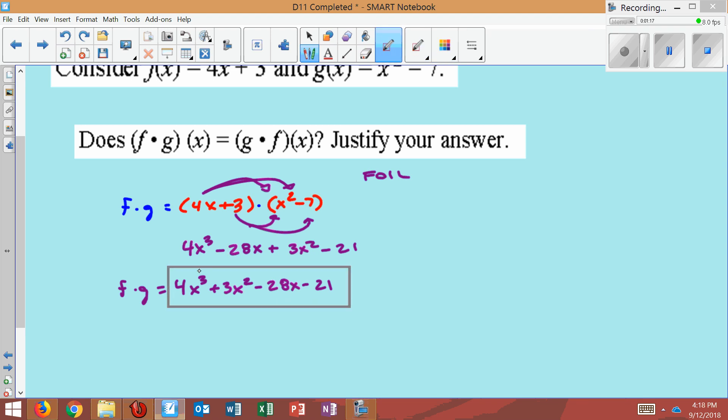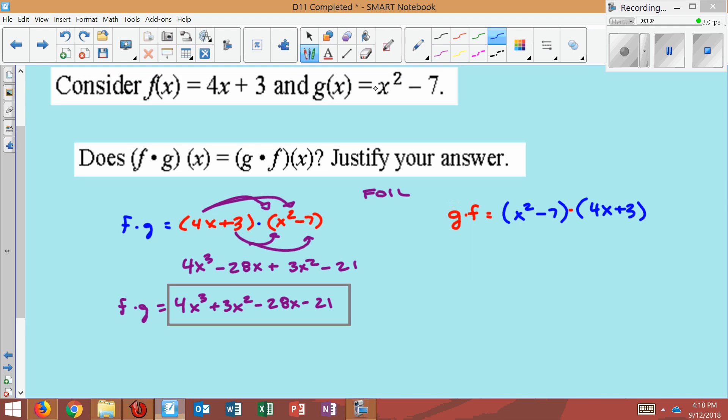Now let's see if this equals g times f. So I'll come over here, g dot f is going to equal, and g was x squared minus 7. And we'll multiply this times f, which is 4x plus 3. I'm getting these equations from right there.